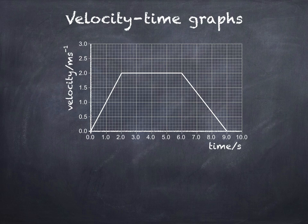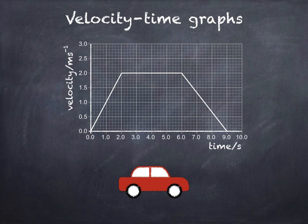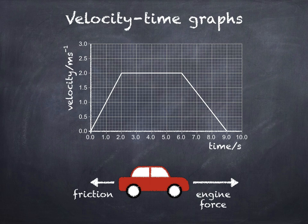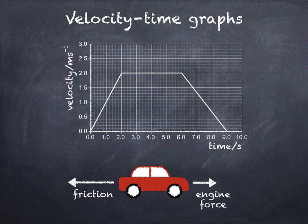To finish off, I'd like to talk about Newton's first and second laws. Imagine the velocity-time graph is for a toy car. During the first 2 seconds we have a constant acceleration, so the forces acting on the car must be unbalanced — this is an example of Newton's second law. In this case the engine force is greater than the frictional force. Having calculated the car's acceleration, we could use the equation F = ma to find the unbalanced force, as long as we know its mass. For the middle section from 2 to 6 seconds, we have a constant velocity, so the forces must be balanced — equal in size but opposite in direction. This is an example of Newton's first law. Finally, as the car decelerates in the last 3 seconds, the forces are unbalanced again; this time the frictional force is greater than the engine force — Newton's second law again.